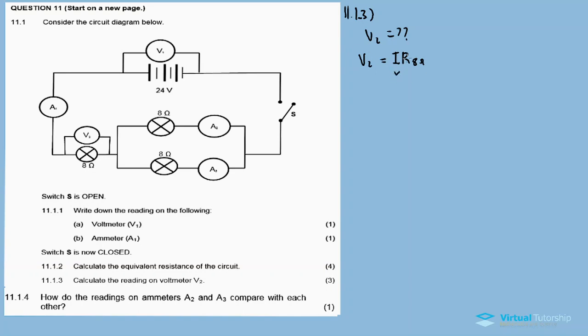We'll calculate the current using the total resistance and total potential difference. In a series connection, current remains constant but potential difference is divided. In a parallel connection, current is divided. For this circuit, the 8 ohm resistor and the parallel connection are in series, so the current flowing through the 8 ohm is the same as the total current for the whole circuit.